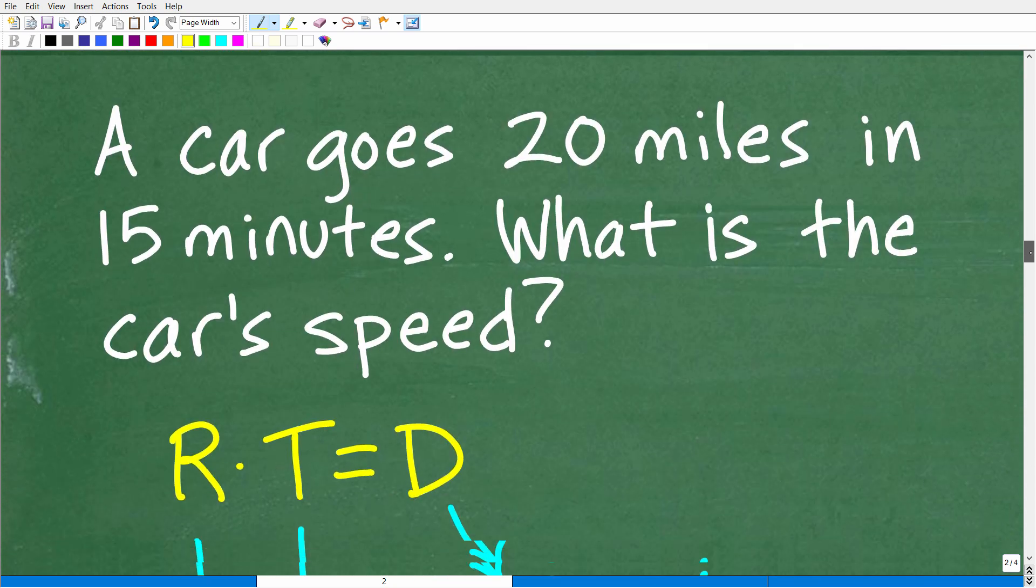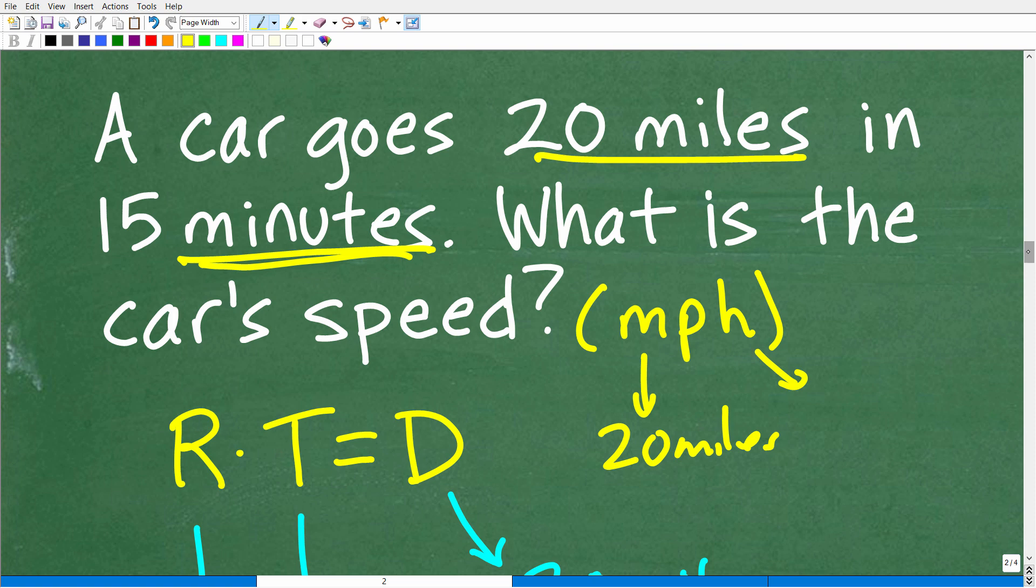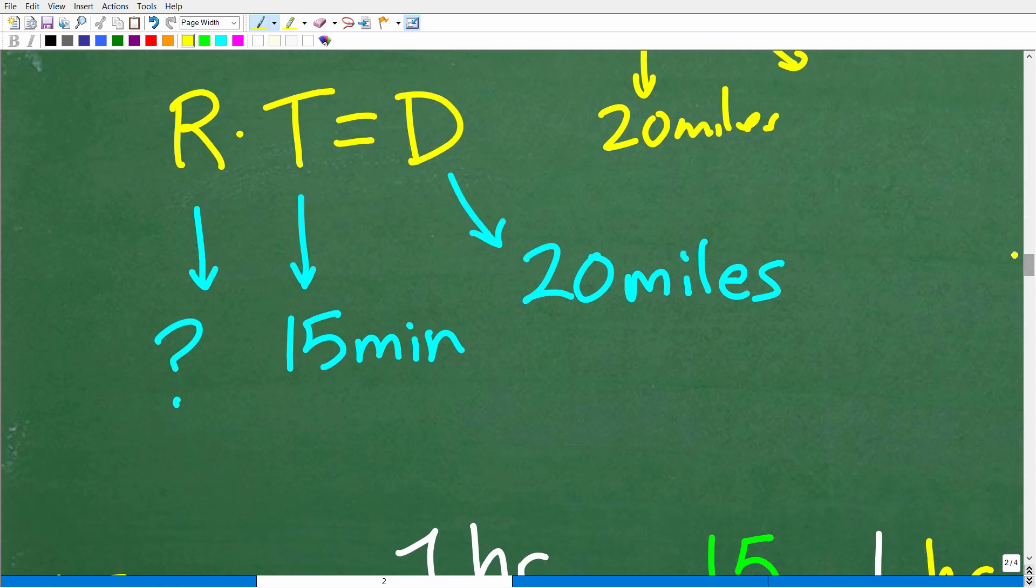All right. So here is the problem again. A car goes 20 miles in 15 minutes. What is the car's speed in miles per hour? Well, I have my information here, 20 miles. That's good. But the time information is in minutes. So I have a bit of a problem, but nothing that I can't fix.